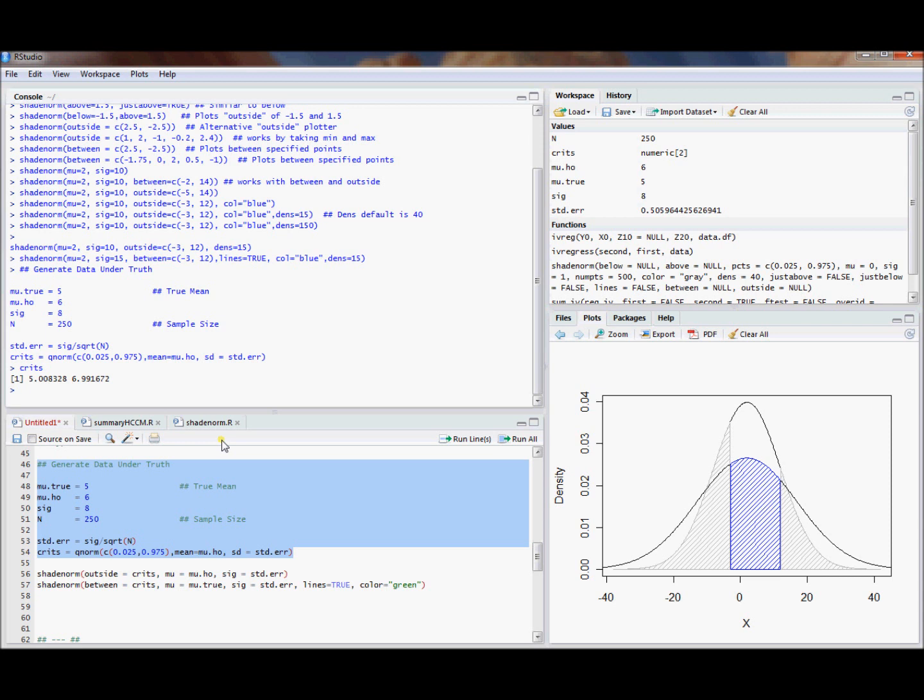What's kind of weird here is that these aren't critical values in terms of the test statistic. These are critical values in terms of what is the computed value of my x bar. If I wanted the critical values in terms of the test statistic, I would have just used the standard normal. But I'd like to plot this on the original scale.